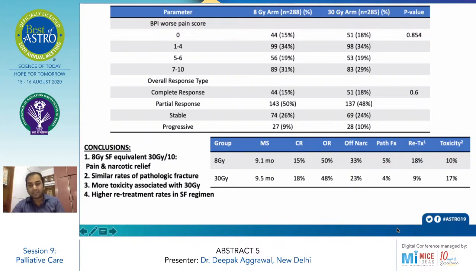Pathological fracture, re-treatment, and toxicity showed no significant difference between the two arms. To conclude, this previous study showed 8 Gy was equivalent to 30 Gy in 10 fractions for pain and narcotic relief. However, there was a similar rate of pathological fracture, 30 Gy/10 had more toxicity, and the re-treatment rate in single fraction was higher.